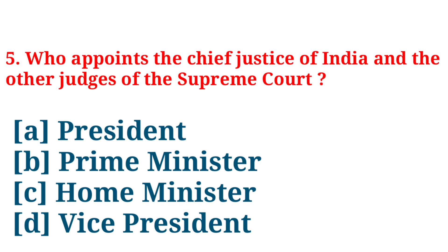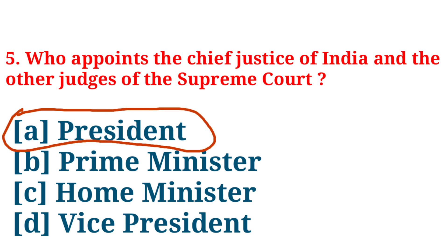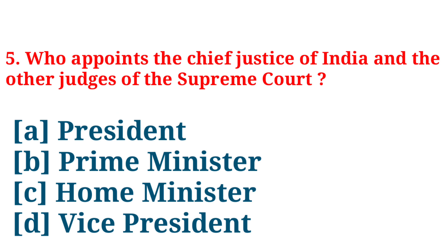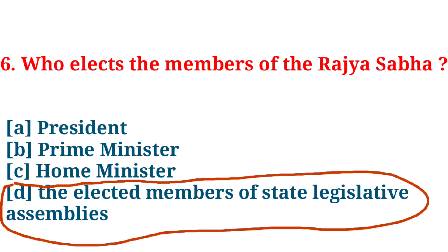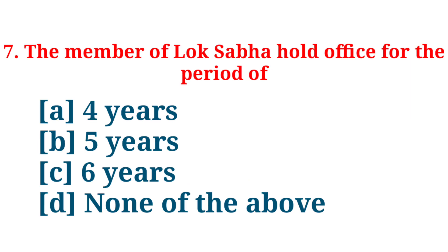Who appoints the Chief Justice of India and other judges of the Supreme Court? Answer: President. Who elects the members of the Rajya Sabha? Answer: The elected members of the state legislative assemblies.